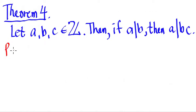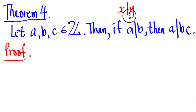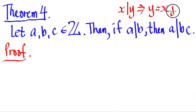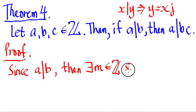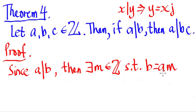We're going to use the same process we used for the last three videos. If x divides y, we say x is a factor of y, which implies y is equal to x multiplied by some integer j. So since we're given that a divides b, there exists some integer m such that b equals a times m — meaning multiplying a by m gives us the value of b.